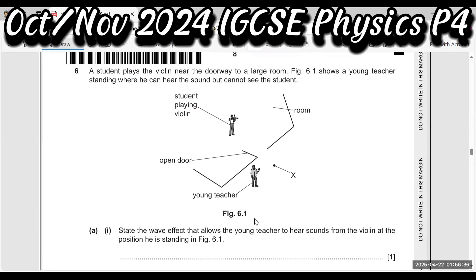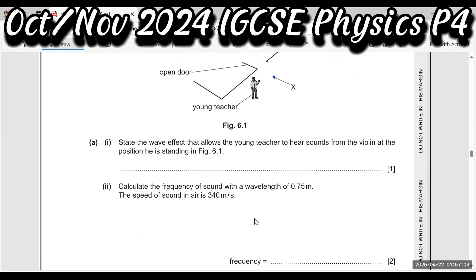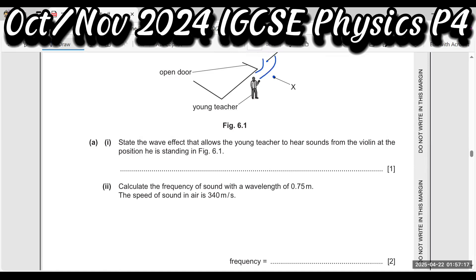A student plays violin near the doorway to a large room. A teacher standing outside can hear the sound but cannot see the student. The wave effect that allows the teacher to hear the sound is diffraction — the sound waves expand around the short edges of the doorway opening.